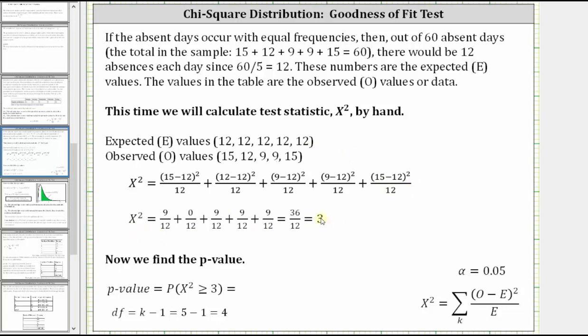And now that we have chi-square, in order to find the corresponding p-value, we need to recognize that the degrees of freedom are equal to 5 minus 1, or 4, because there are 5 categories Monday through Friday. And the p-value is equal to the probability chi-square is greater than or equal to 3.